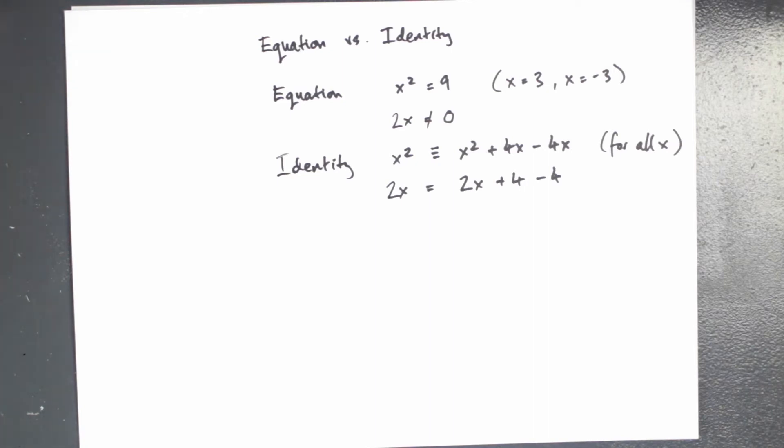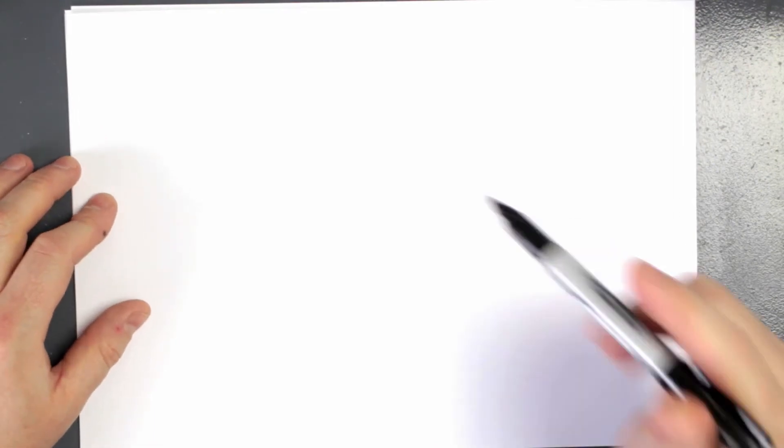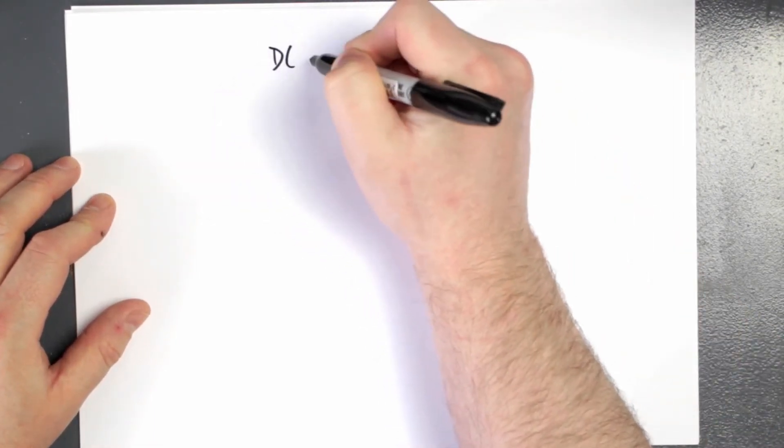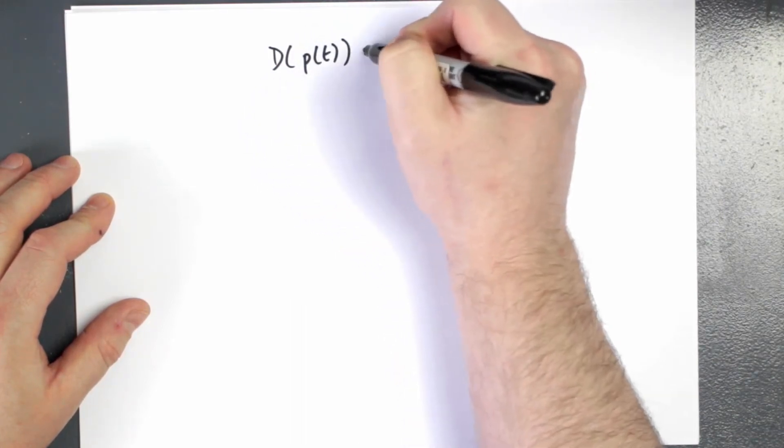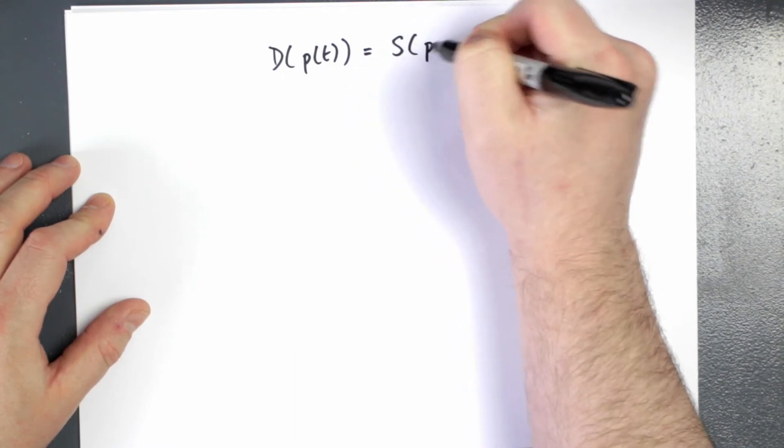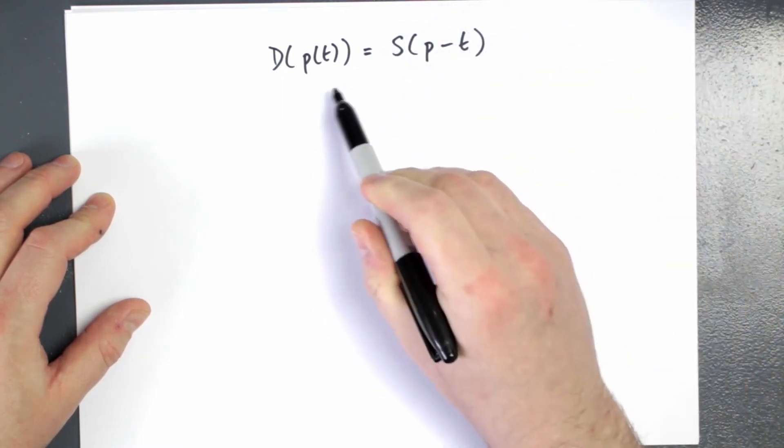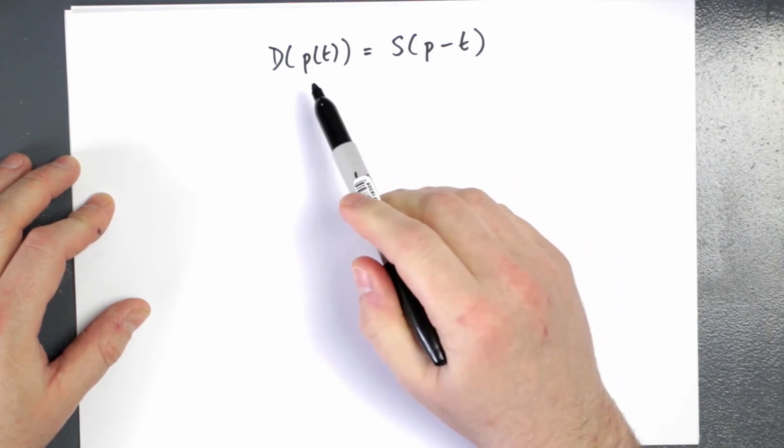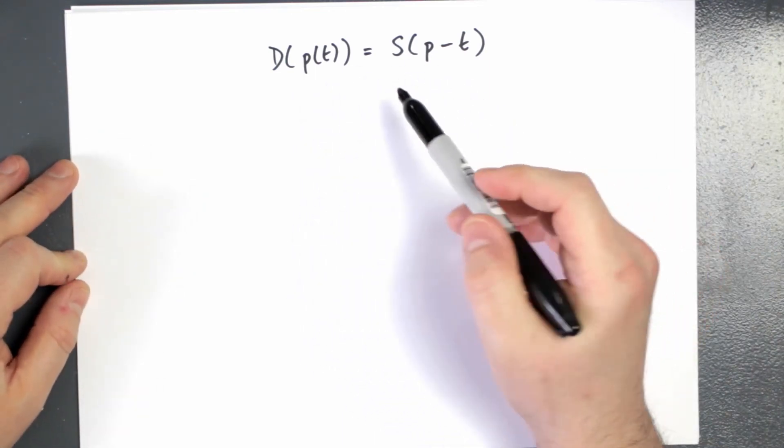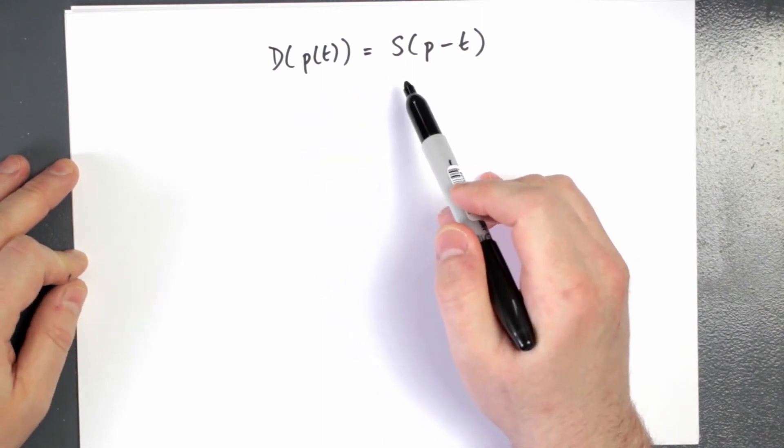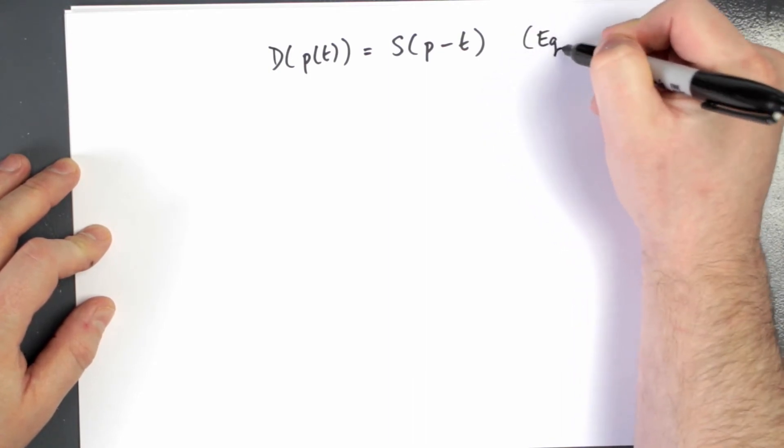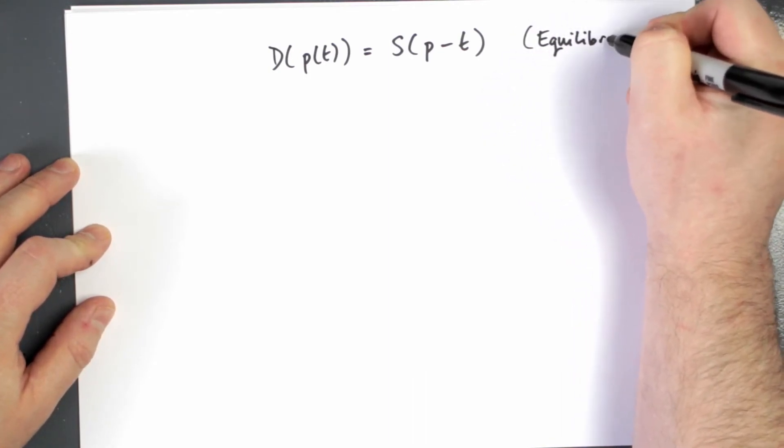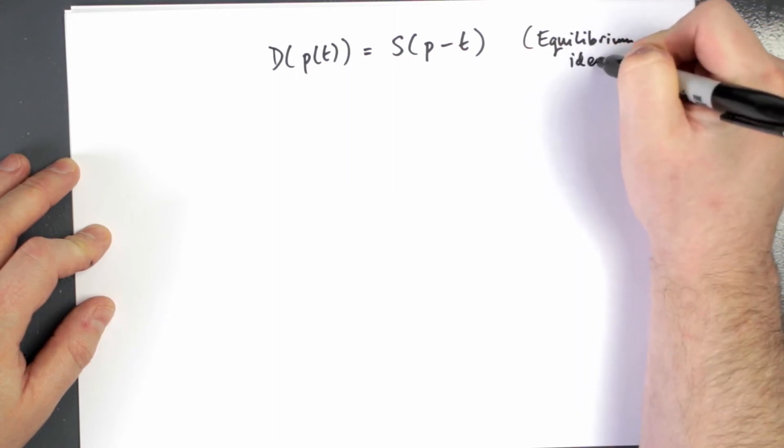Okay, now let's look at our tax problem. We've started with this idea that the demand in equilibrium, let me just write this out, we've started with this condition. We've said, well, in equilibrium, whatever the tax rate is and the price, if it's an equilibrium, then supply equals demand. So we're going to treat this as an equilibrium identity. It's always true if we're in equilibrium.